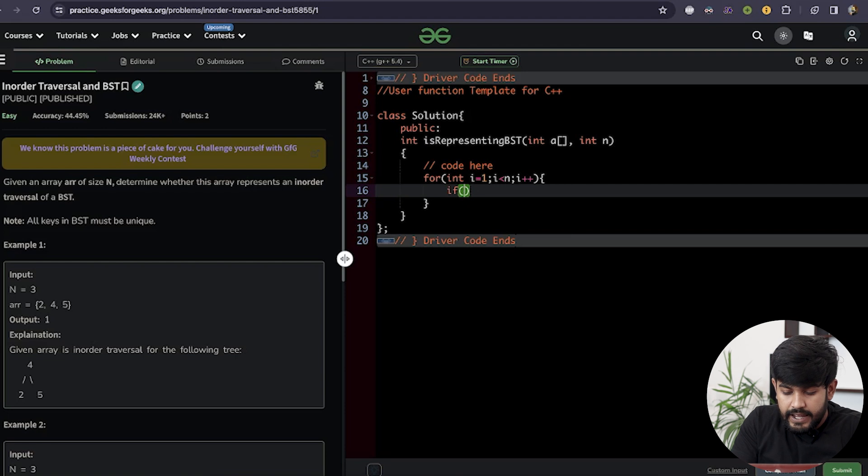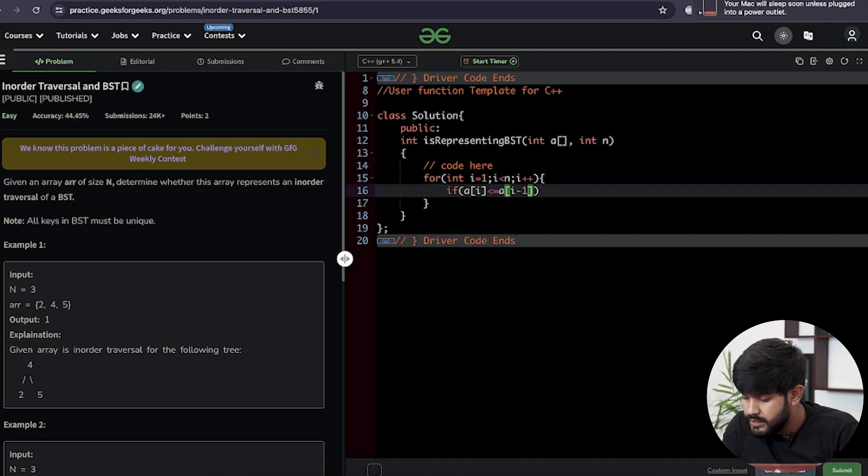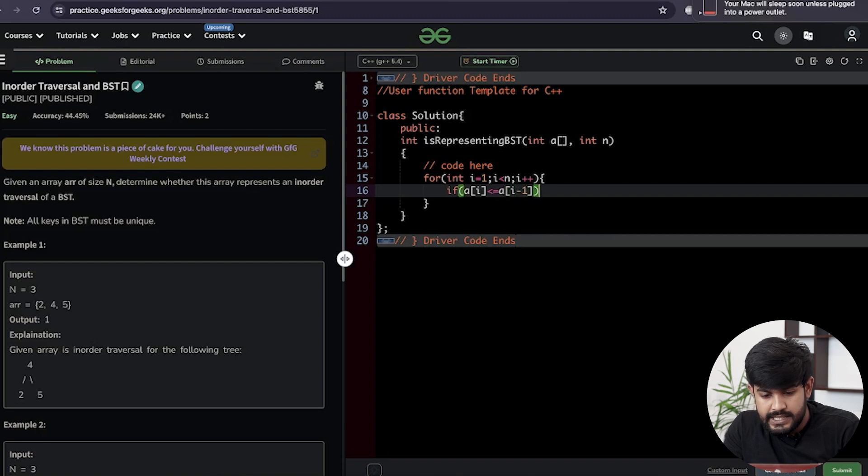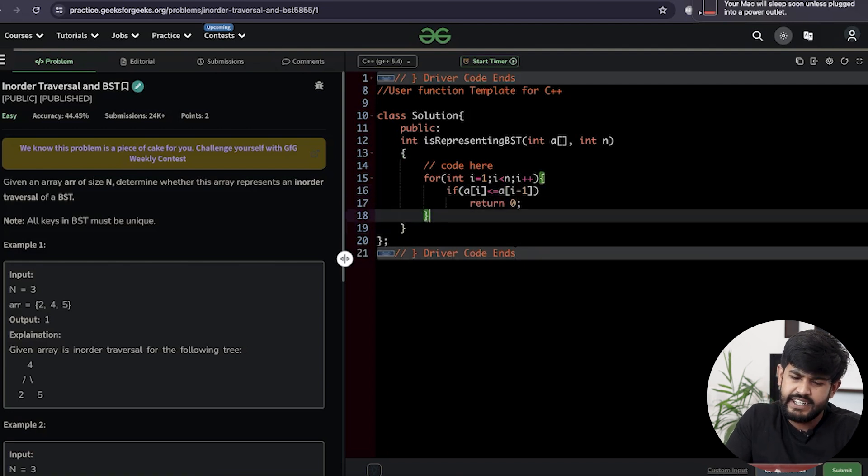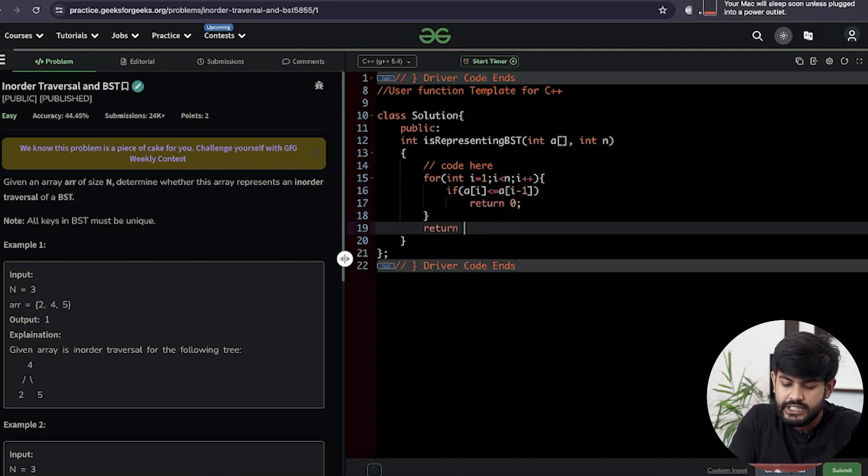So starting from the first element: i is less than n, i plus plus. And we say if a[i] is less than or equal to a[i-1], then we return 0.